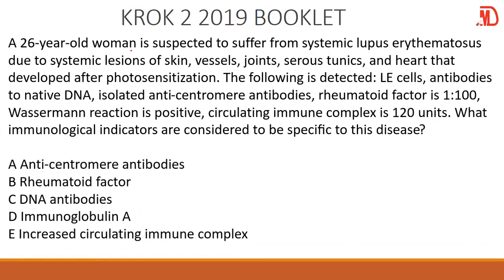So we have a 26-year-old woman suspected to suffer from systemic lupus erythematosus. During the test they detected LE cells — lupus erythematosus cells — and antibodies to the native DNA. This is your clue: don't waste much time. There are antibodies developing against their own DNA, and of course we also know that systemic lupus erythematosus is an autoimmune reaction. So your answer is just antibodies to native DNA — that is the immunological indicator for this particular disease.